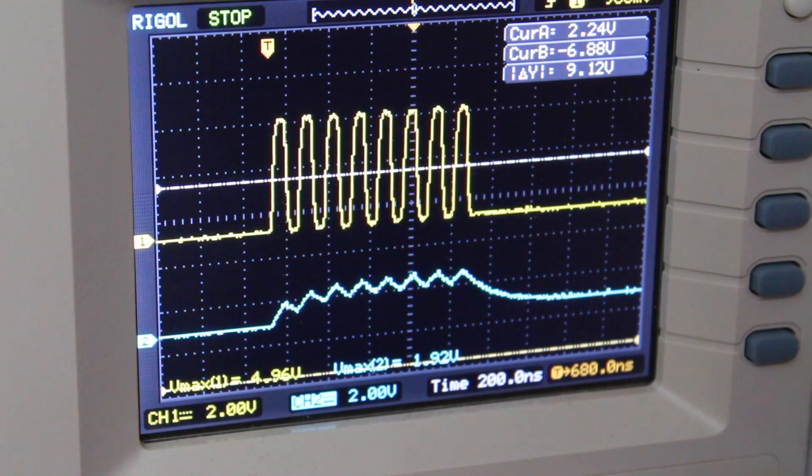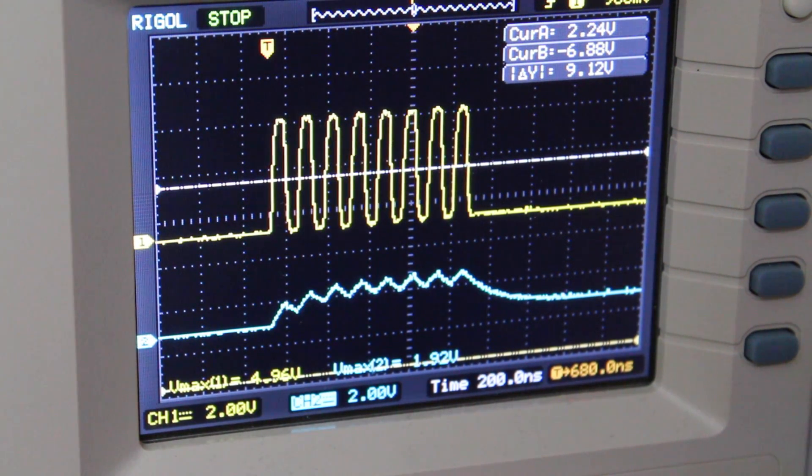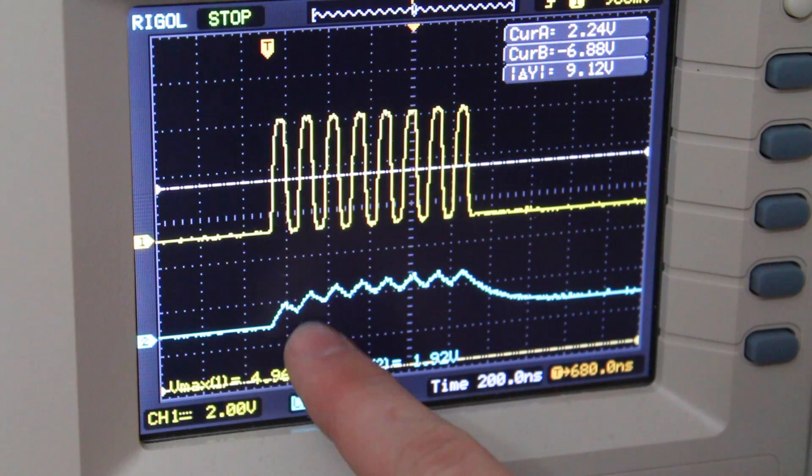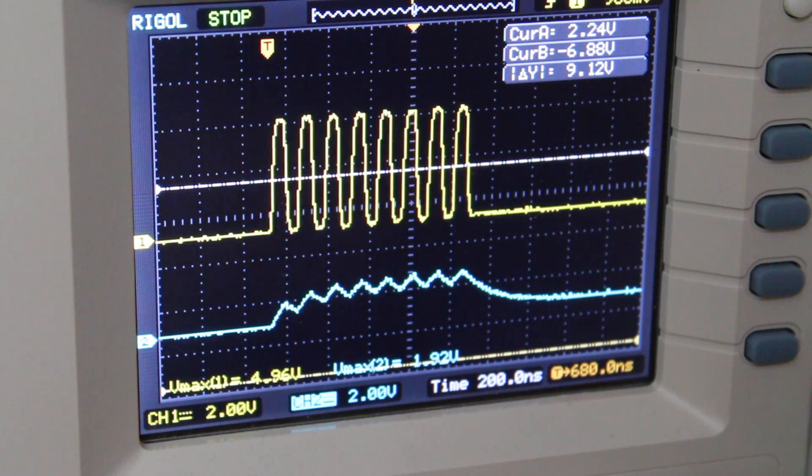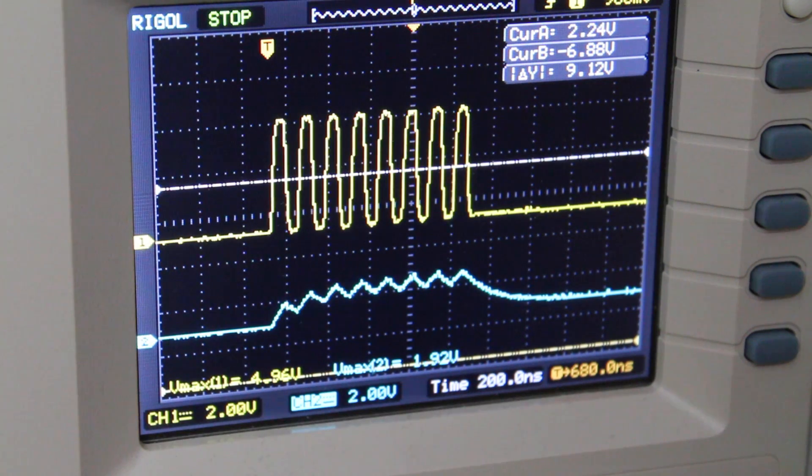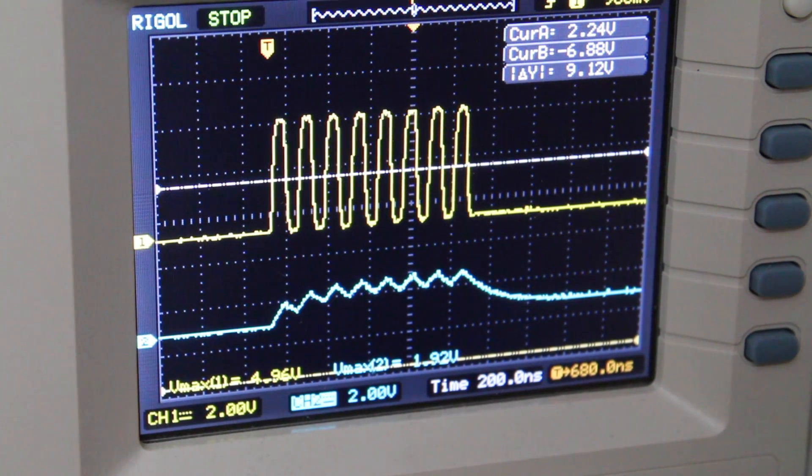At eight megahertz, the output is unrecognizable and completely useless. It's not even going all the way back down to zero, can barely get up to three volts. This is definitely a point where the resistor divider network method fails.